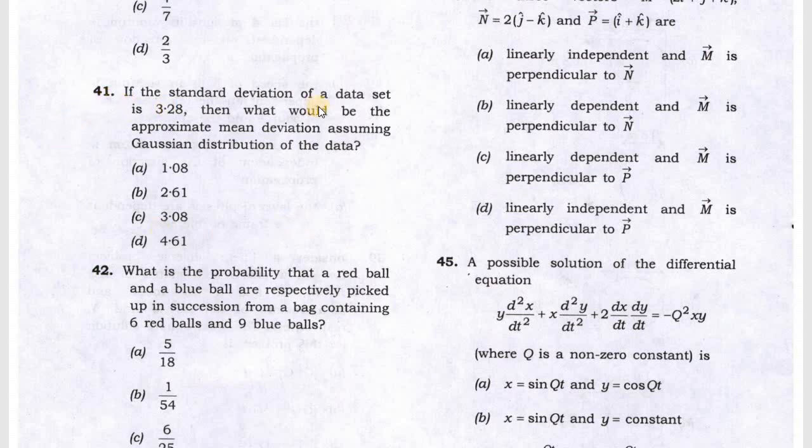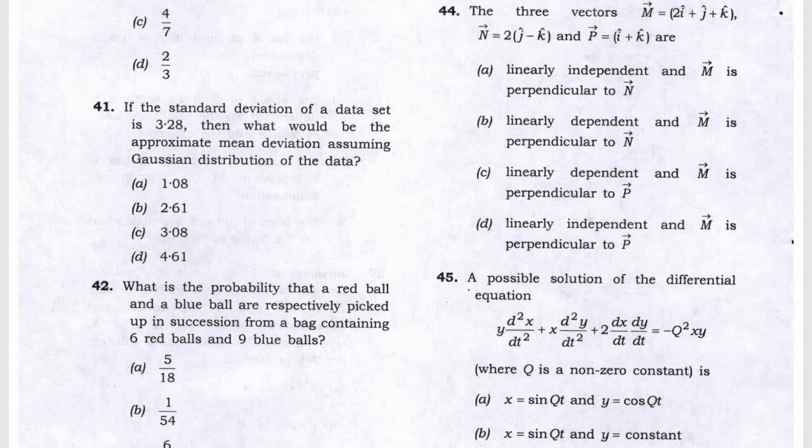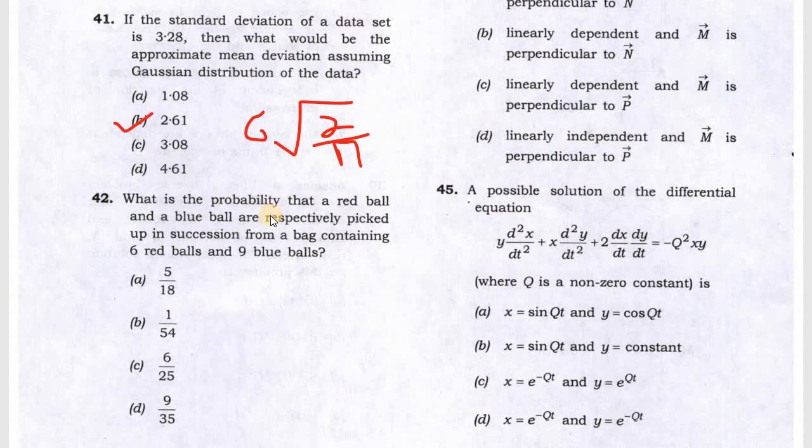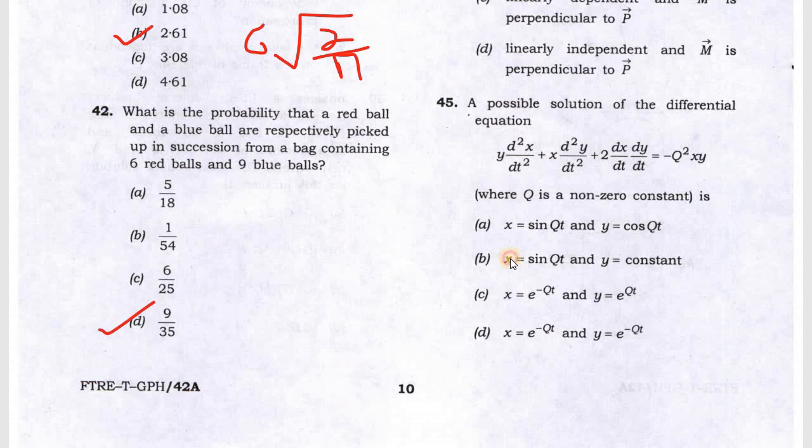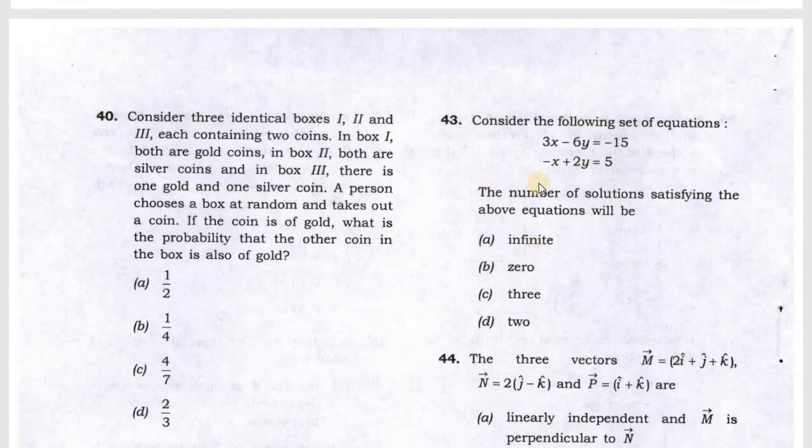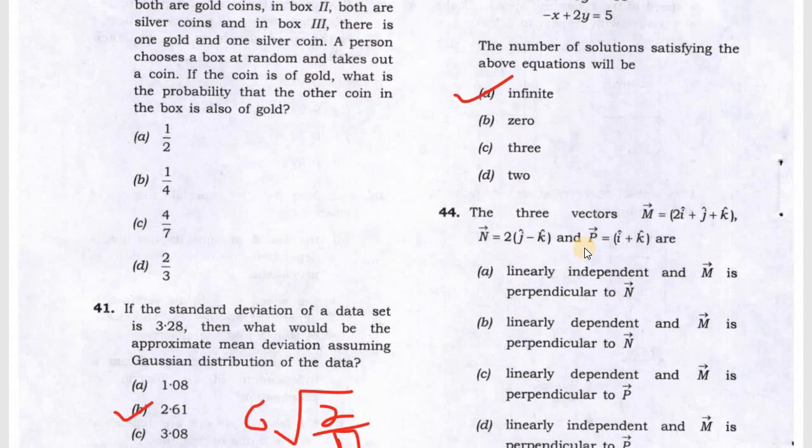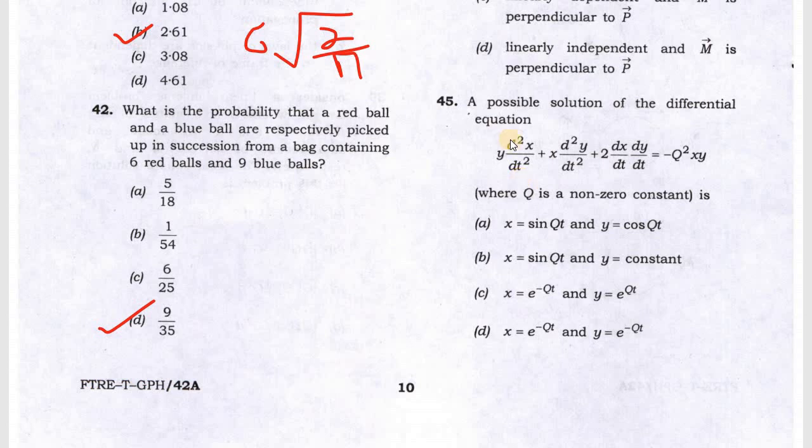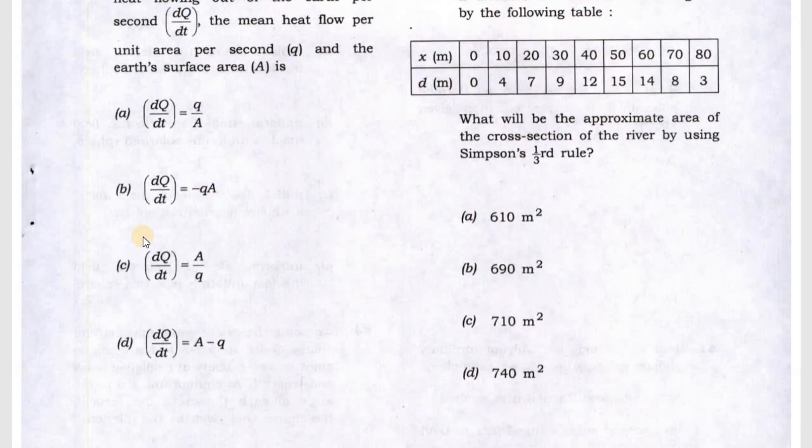Let's start from question 41. Question 41 gives the standard deviation, and they are asking for the mean distribution. For mean distribution and standard deviation there is a formula: sigma times root of 2 by pi. If you put that, you will get the B answer. Question 42 is again a probability problem with a box containing 6 red balls and 9 blue balls, answer is D.